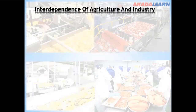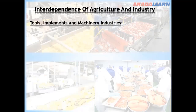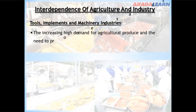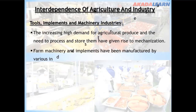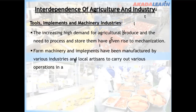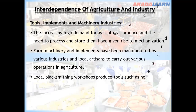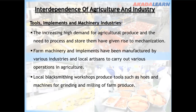Looking at the interdependence of agriculture and industries — tools, implements and machinery industries: The increasing high demand for agricultural produce and the need to process and store them have given rise to mechanization. Farm machinery and implements have been manufactured by various industries and local artisans to carry out various operations in agriculture. Local blacksmithing workshops produce tools such as hoes and machines for grinding and milling of farm produce.